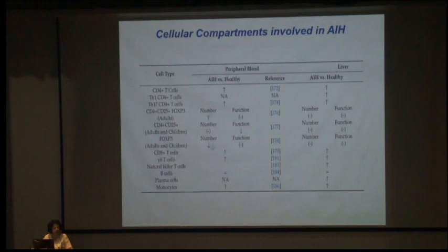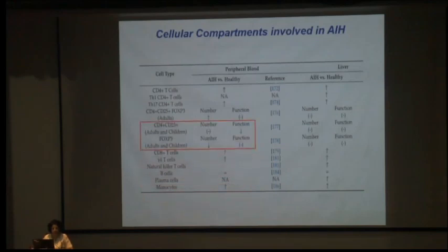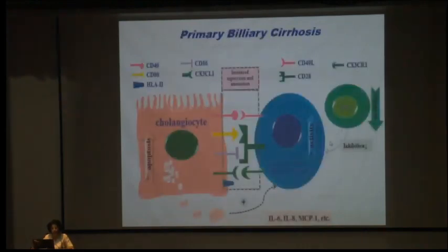However, FOXP3 and T-regs were decreased — that is the reason autoimmunity is more prevalent. CD8 T cells and gamma-delta T cells were increased. In the periphery, CD25+FOXP3+ T-regs were decreased, and while there is no liver data yet, it is supposed that in autoimmunity regulatory T cells are decreased — similar findings in primary biliary cirrhosis.